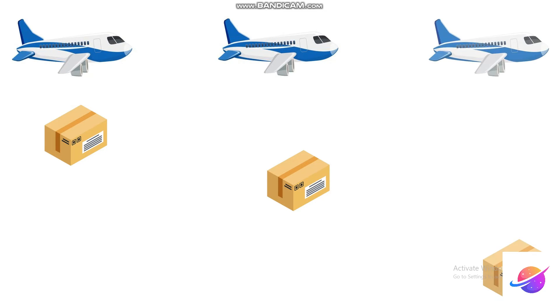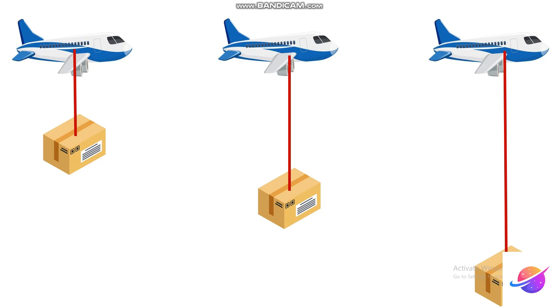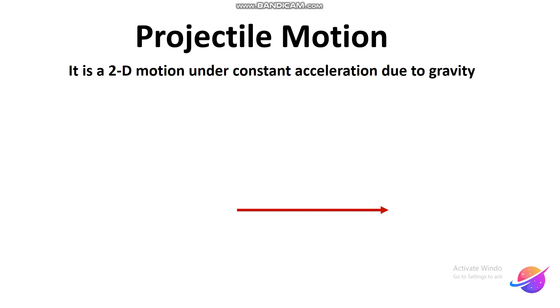Now if we have a parcel released from the aeroplane, we will notice that the parcel and the aeroplane both will cover same horizontal distance. Seems like the parcel is still inside the aeroplane. This is one quality of projectile motion that x and the y-axis are independent of each other.